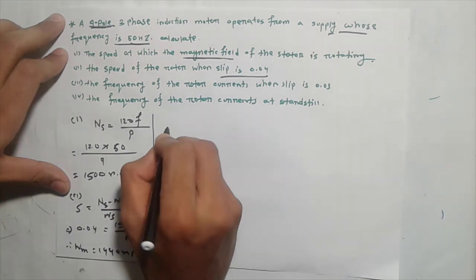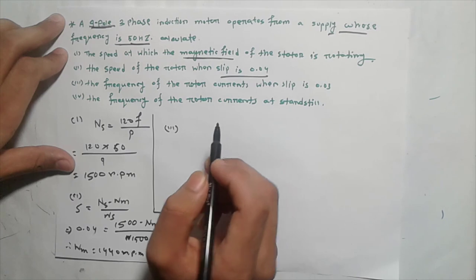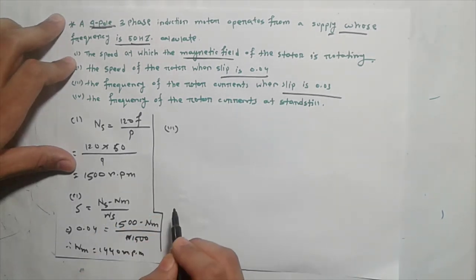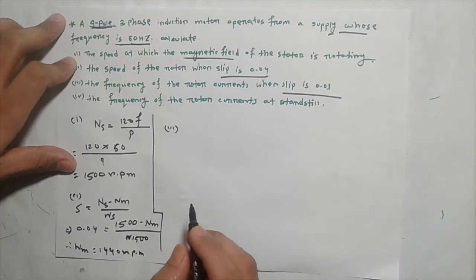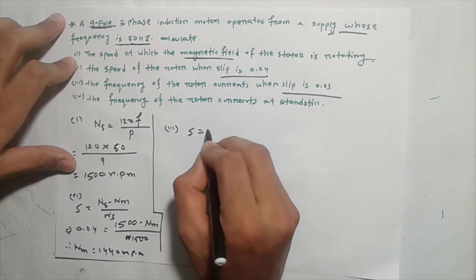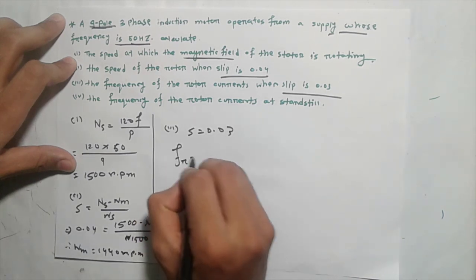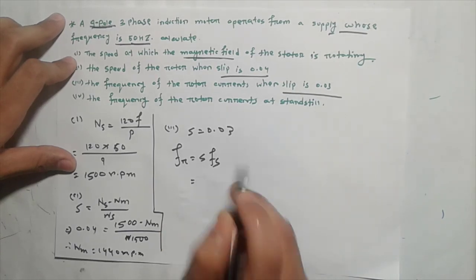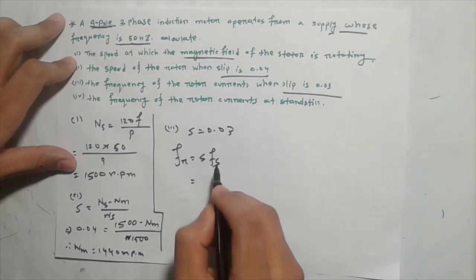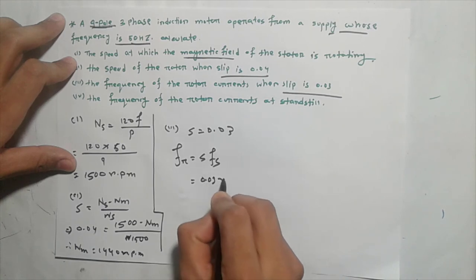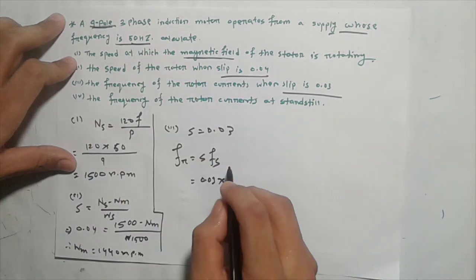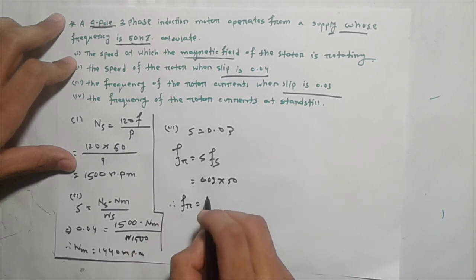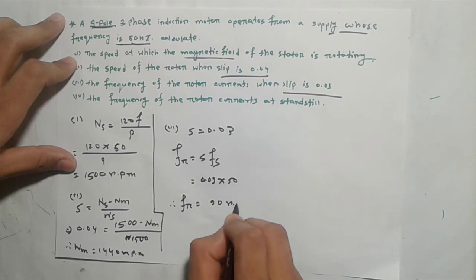The next part asks for the frequency of the rotor currents when slip is 0.03. The rotor frequency Fr equals slip s multiplied by the stator frequency Fs. When slip is 0.03 and stator frequency is 50 Hz, we calculate Fr.